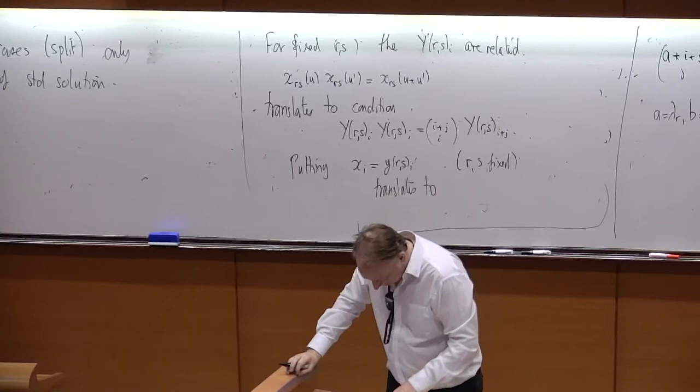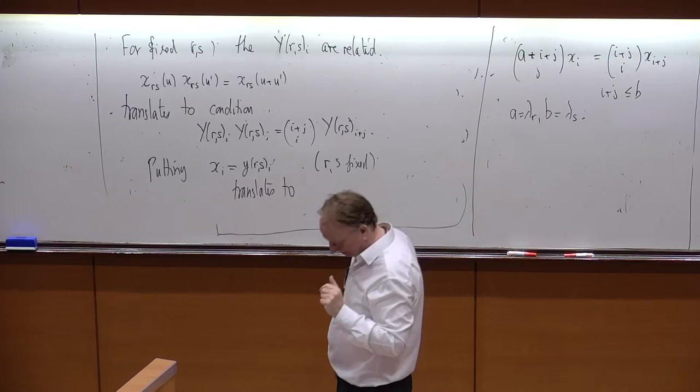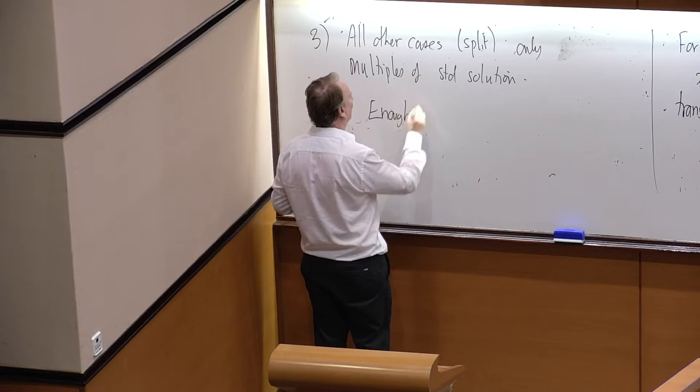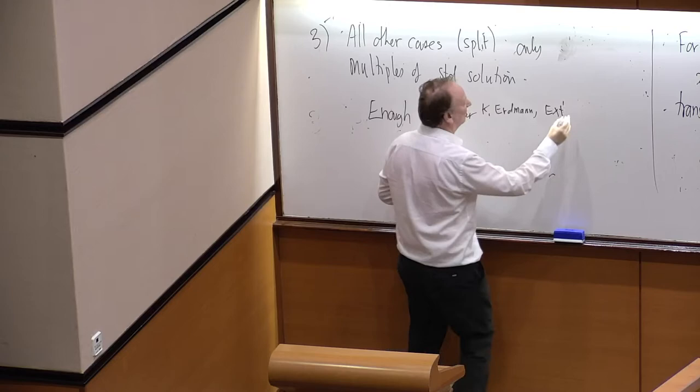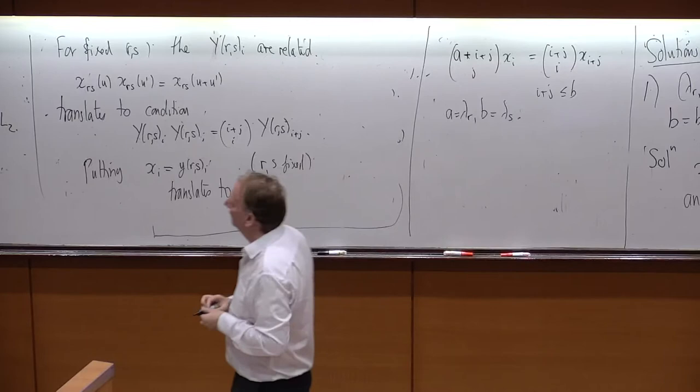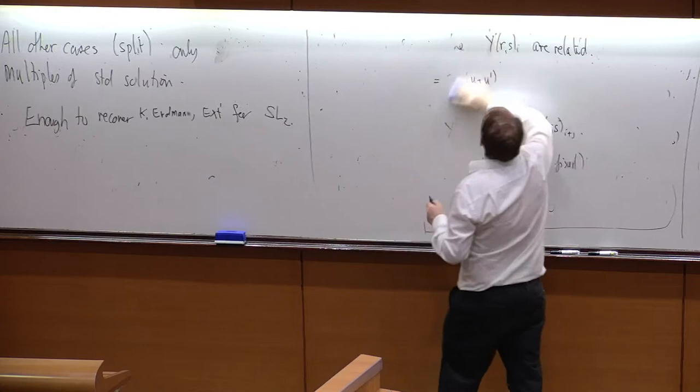So that is at the very beginning of the analysis, but it's already enough to do GL2. Of course, GL2 was done a long time ago by Karin. But this is enough to recover extensions of Weyl modules for SL2. That's what it corresponds to, this case where you only have an r and an s. That would be the case if you had GL2 in particular. You could only have r is equal to 1 and s is equal to 2. And so you would be getting all the extensions by these kind of basic extension sequences.